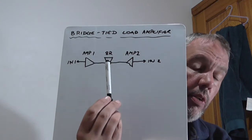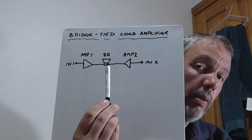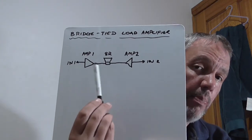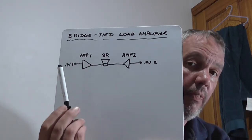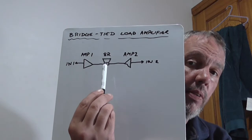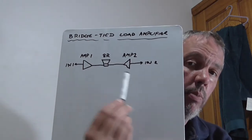What is the advantages of having a Bridge-Tied Load? Well it doubles effectively the power output. So take our example of a 50 watt per channel amplifier. Now the speaker is seeing effectively 100 watt across it.